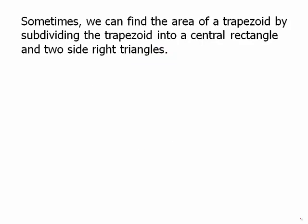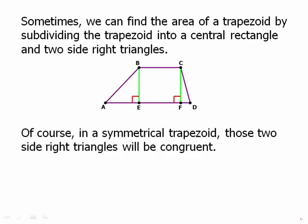Sometimes we can find the area of a trapezoid by subdividing the trapezoid into a central rectangle and two side right triangles. So this is often what the test will have us do. We have two side right triangles. We can find information about those with the Pythagorean theorem, and that will allow us to solve for everything and find all the areas. And of course, if it's a symmetrical trapezoid, those two side right triangles will be congruent, which makes things even easier.